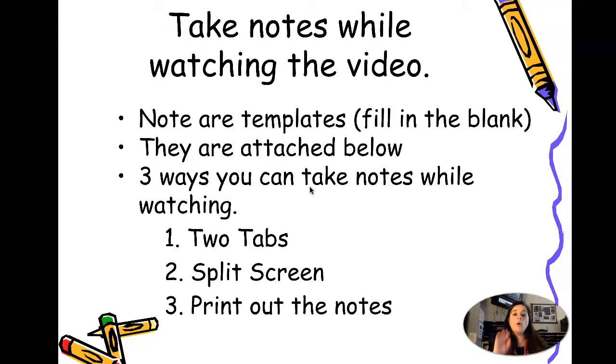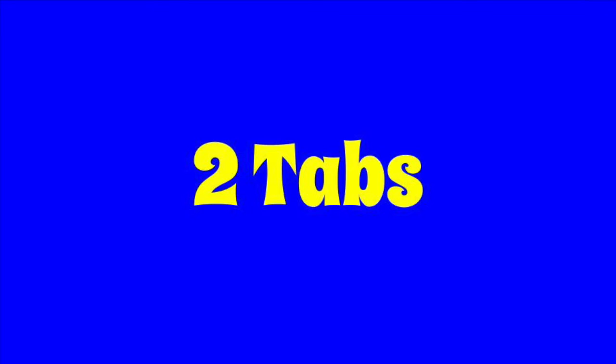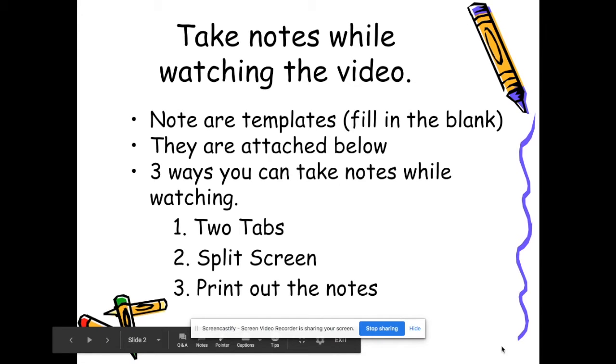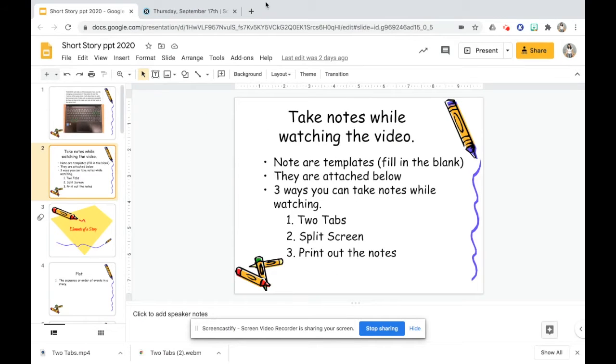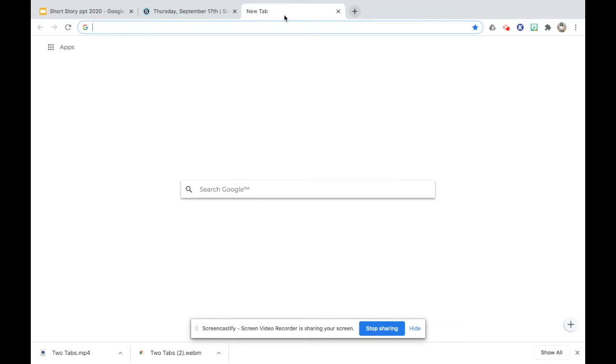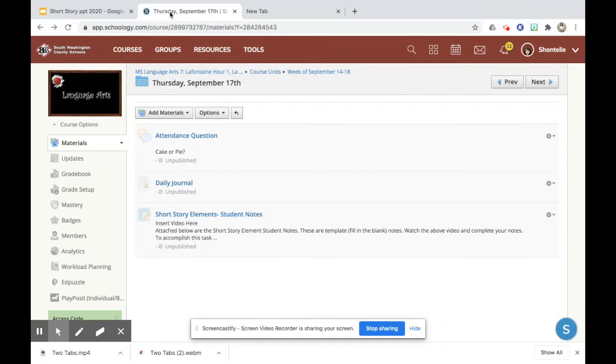So you could open up two tabs on your Chromebook. So I will show you that. To use two tabs while taking your notes, you are going to need to go up to the top of your screen and click this plus sign. Once here, you're going to Google Schoology and open up Schoology and get to the notes. I have Schoology open up right here. So I'll click that.